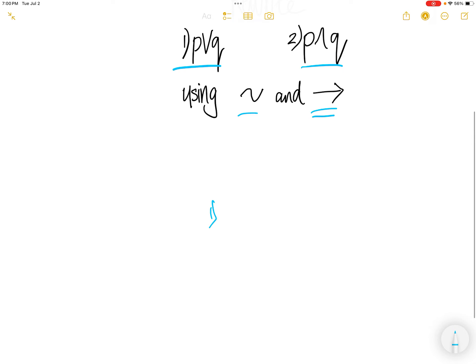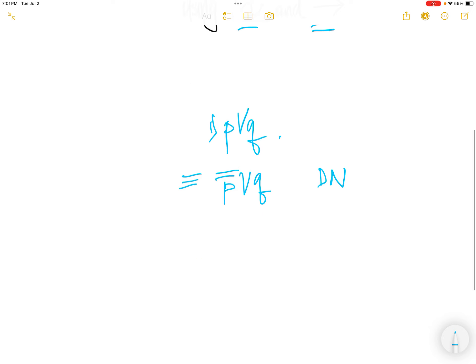Let's start with the first one. First one we have p or q. That is equivalent to NOT NOT p or q, using the double negation. Then this is equivalent to NOT p imply q.